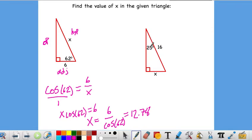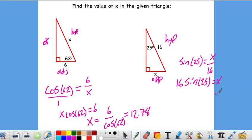For this problem here, we have this angle of 25. This is our opposite side. This is our hypotenuse. So, we'll use sine. Sine of 25 is equal to x over 16. Multiply both sides by 16. 16 sine of 25 is equal to x. So, we do 16 times the sine of 25, and we get 6.76.